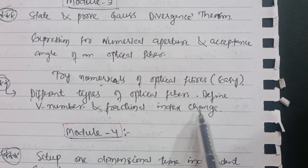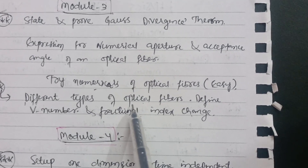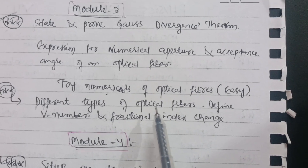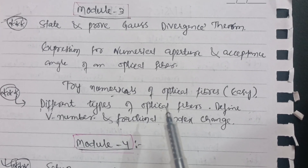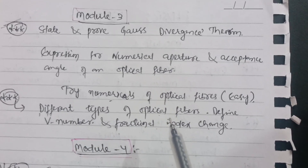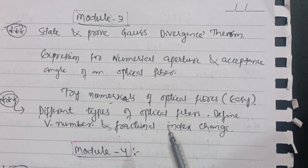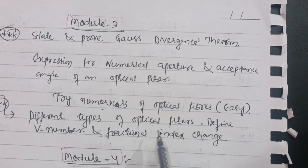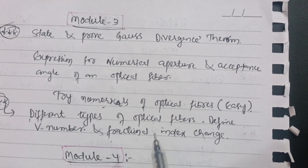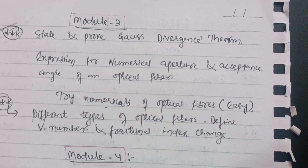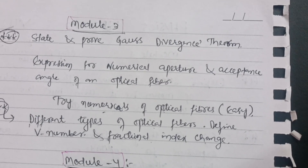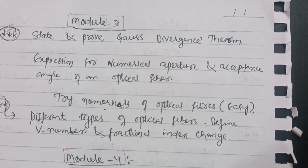Another important question in Module 3 is the different types of optical fibers, and definitions of V-number and fractional index change. Draw the figures neatly in the examination — if you draw rough diagrams you will definitely lose marks. Make your diagrams very clear so the evaluator can easily understand and evaluate them.